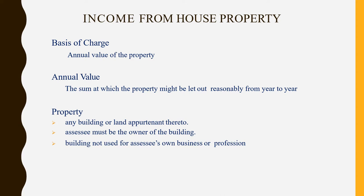Let us discuss what is basis of charge. The basis of charge is the annual value of the property. Annual value means the sum at which the property might be reasonably let out from year to year. For example, the assessor may say he is receiving 10,000 rupees as rent from a tenant. But we have to calculate a rent that the property might reasonably generate — not the actual rent received. That calculated reasonable rental income is called the annual value.